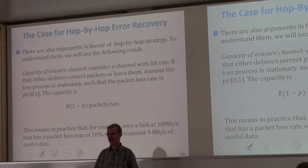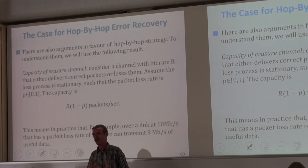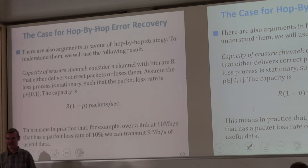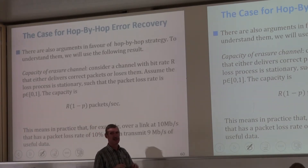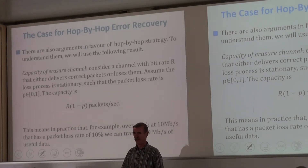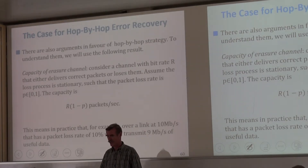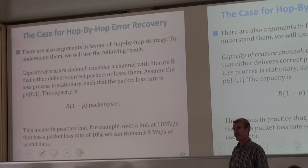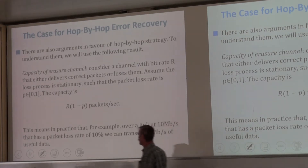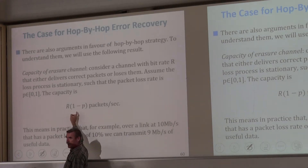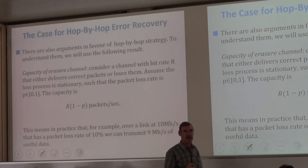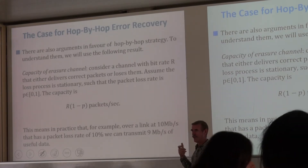The only difficult thing is to define capacity. Capacity, intuitively, is the rate at which you can convey information through this channel — more precisely, it's an upper bound on the rate that you can approach as close as you want. The answer is this trivial formula: it's the rate of data that is not lost. R is how many packets per second; 1 minus P is the fraction not lost. So the capacity is R times (1 minus P), and information theory says we can approach this if we code things well — for example, by doing TCP.